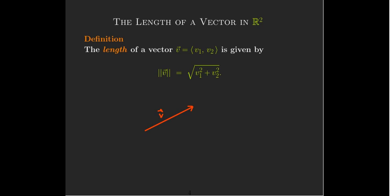Let's look at the length of a vector in R2. Our idea of representing the vector as an arrow is going to motivate this definition. First of all, the notation. We use these double bars, like double absolute value signs, to represent the length of a vector. And it's just going to be the square root of the sum of the squares of the components.